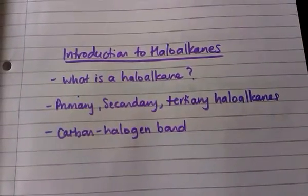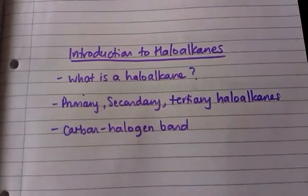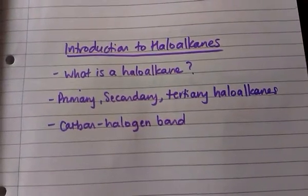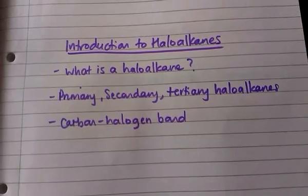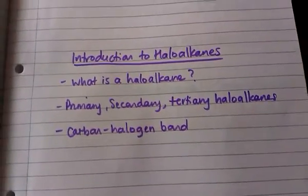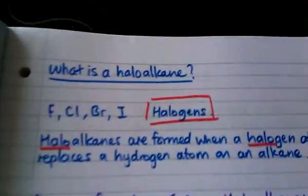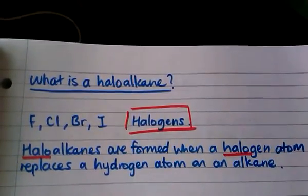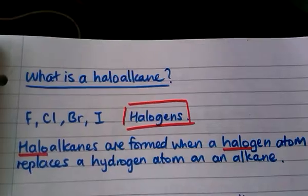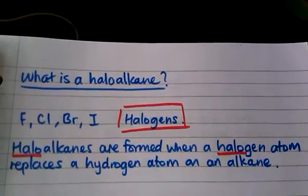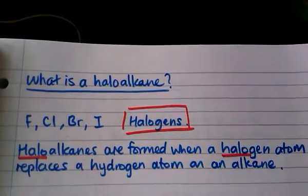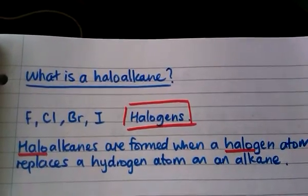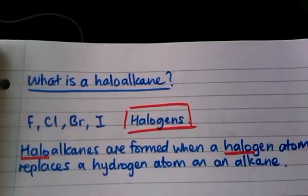This video is an introduction to haloalkanes. I'm going to start off by talking about what a haloalkane is, and then what primary, secondary and tertiary haloalkanes are, and then a little information about the carbon-halogen bond. So first of all, what is a haloalkane? The halogens are in group 7 in the periodic table and we have fluorine, chlorine, bromine and iodine, and we form a haloalkane when a halogen atom replaces a hydrogen atom on an alkane. Remember, alkanes are compounds which contain carbon and hydrogen only.